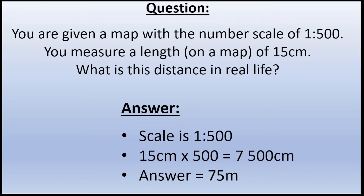One more example: you are given a map with a number scale of 1 to 500. If you measure a length on the map of 15 centimeters, what is the distance in real life? We take our scale of 1 to 500, multiply 15 centimeters by 500, giving us 7,500 centimeters. We then convert that to meters, getting a real-life distance of 75 meters. And that's it for our map scale.